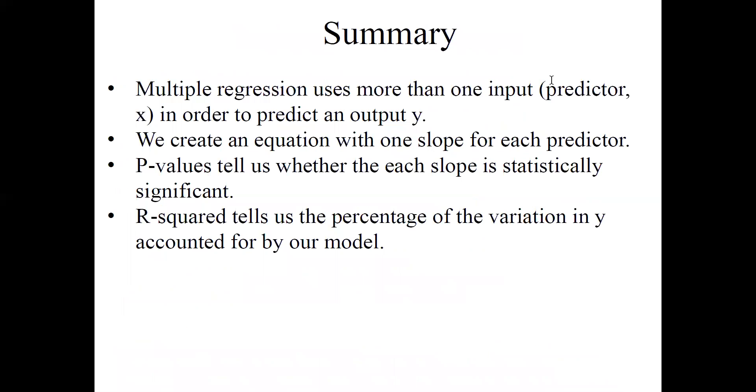Here's our summary. Multiple regression is a process where we use more than one input, more than one predictor or X variable, in order to predict our output Y variable. We end up creating an equation with multiple slopes, one slope for each predictor variable. The P values tell us whether each slope is statistically significant, and R-squared gives us the percentage of the variation in Y accounted for by our model.